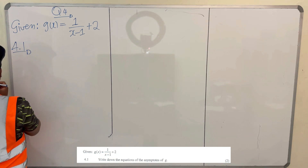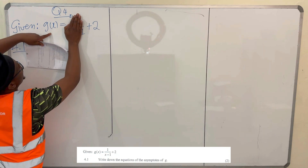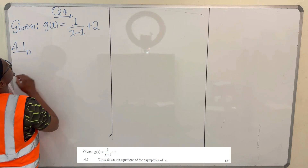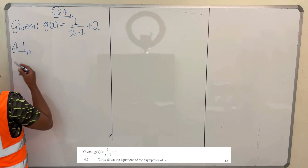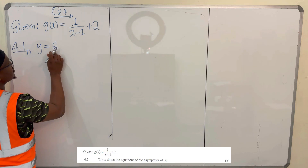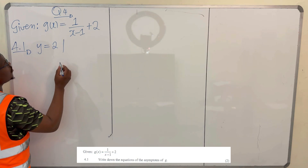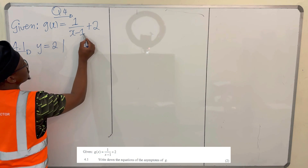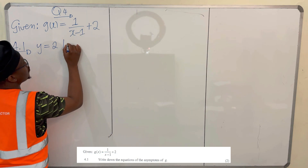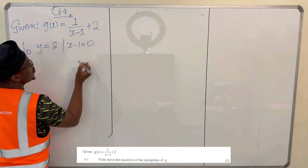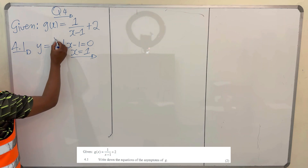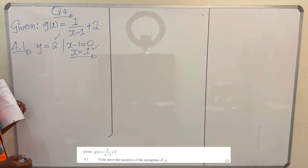For the first asymptote, just cover this part: y is equal to 2, because g(x) is y. So the first asymptote is at y equals 2 — this is the horizontal one. For the vertical one, you equate the denominator to 0 and solve for x. So x minus 1 equals 0, therefore x equals 1. That's the second equation of the asymptote.